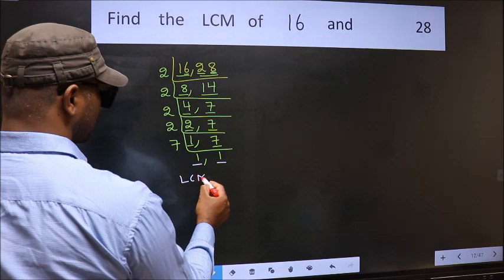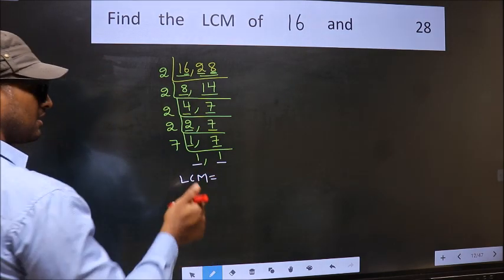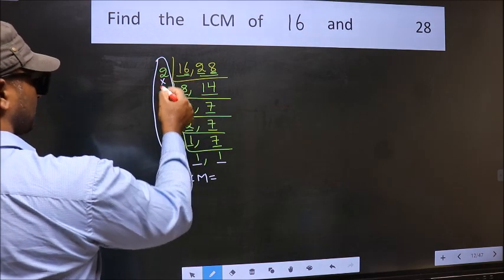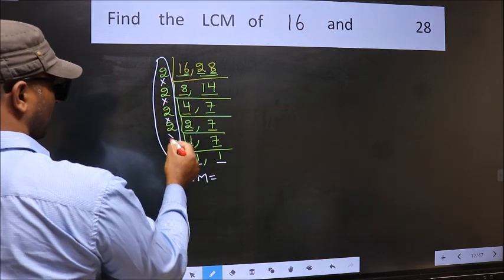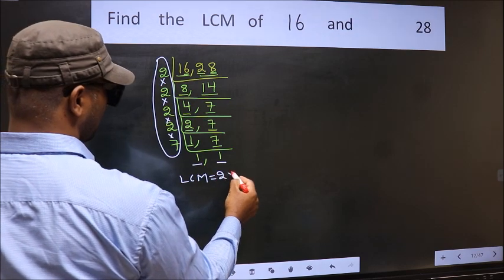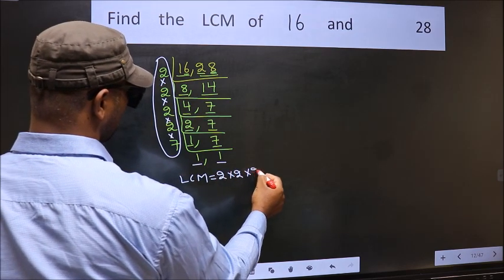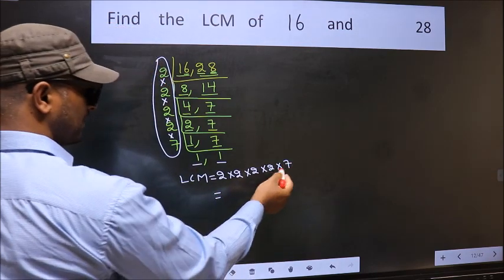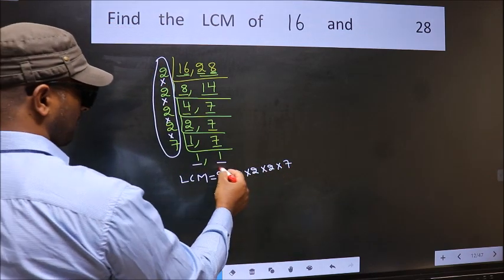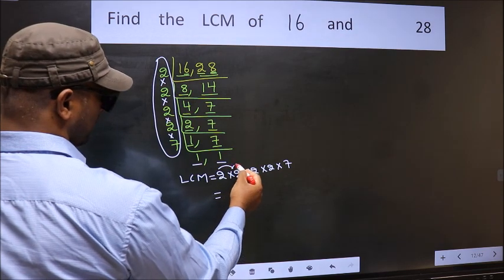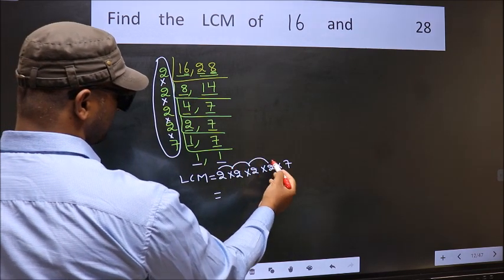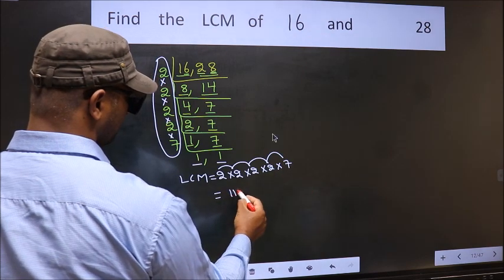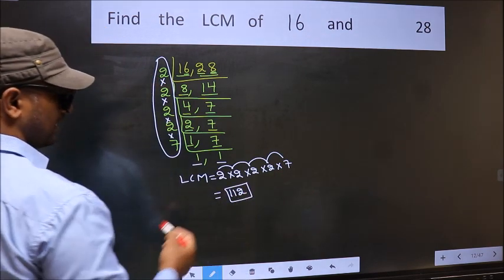So our LCM is the product of these numbers, that is 2 into 2 into 2 into 2 into 2 into 2 into 2 into 2 into 7. So let us multiply these numbers: 2 into 2 is 4, into 2 is 8, into 2 is 16, into 7 is 112. So our LCM is 112.